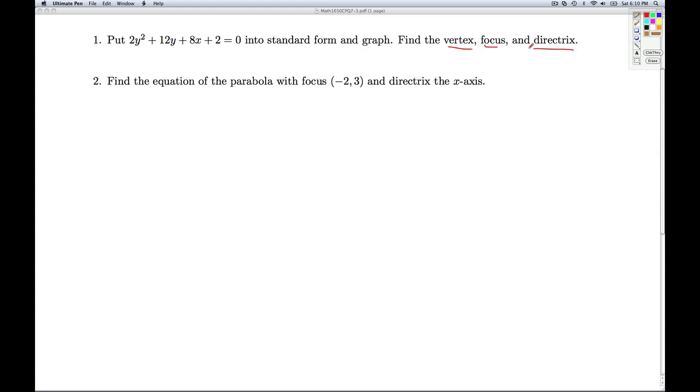This is a clue that what we're looking at is a parabola. How would we know it's a parabola without that information? Well, if we look at the equation that's given, 2y² + 12y + 8x + 2 = 0, we note that only one of the variables is squared. In this case, it's y squared.